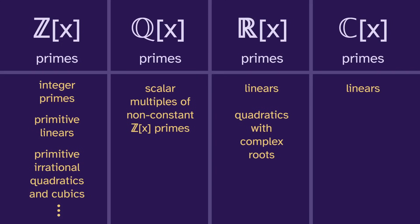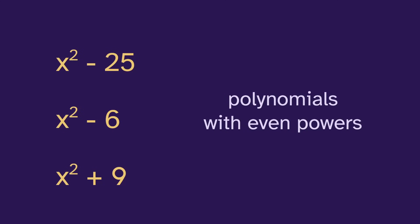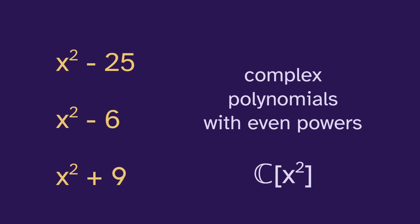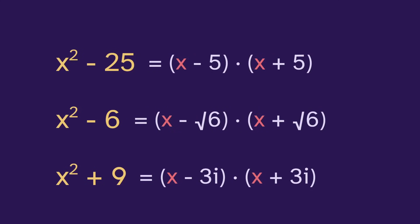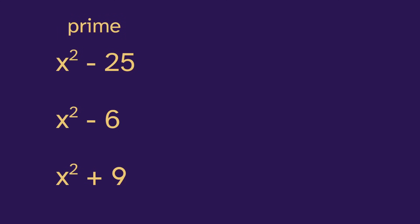We've looked at the primes in all of these domains. So that just leaves us with one remaining question: what domain makes all of these prime? My example is the polynomials with even powers — we write this with x² in the brackets. The z means these are integer polynomials, but we could also take these to be rational, real, or complex. The coefficients don't matter, because each of these factorizations involves an odd power of x, so none of them will be allowed, and therefore these are all prime.